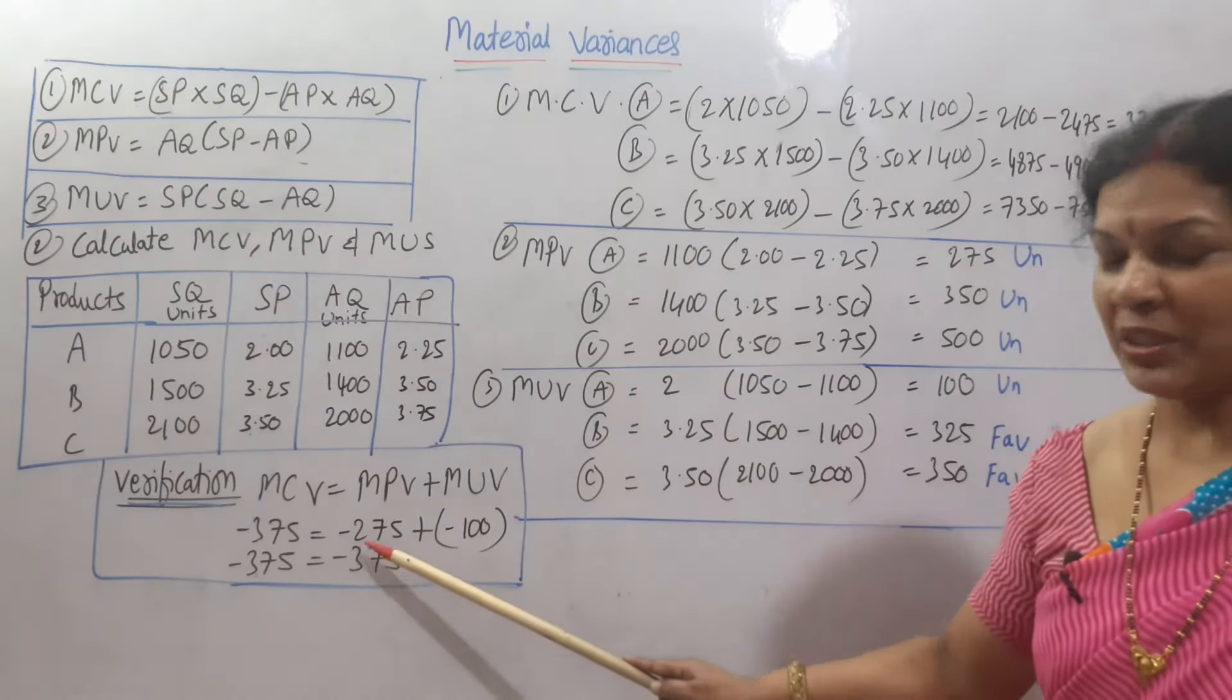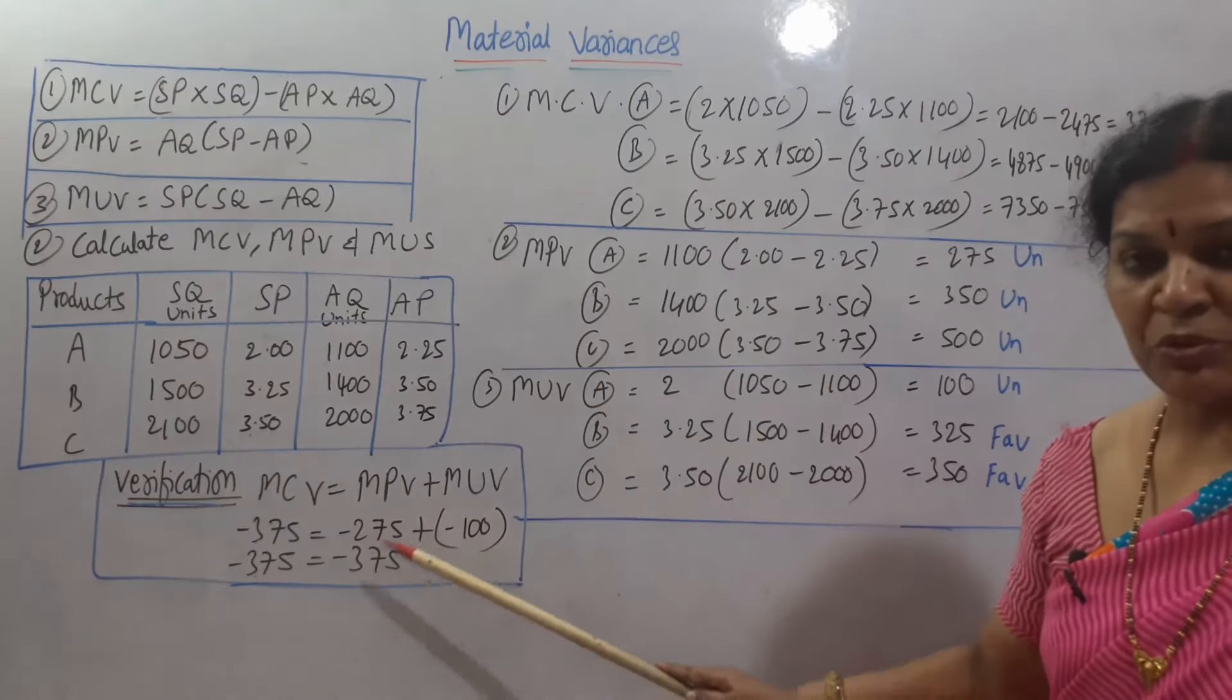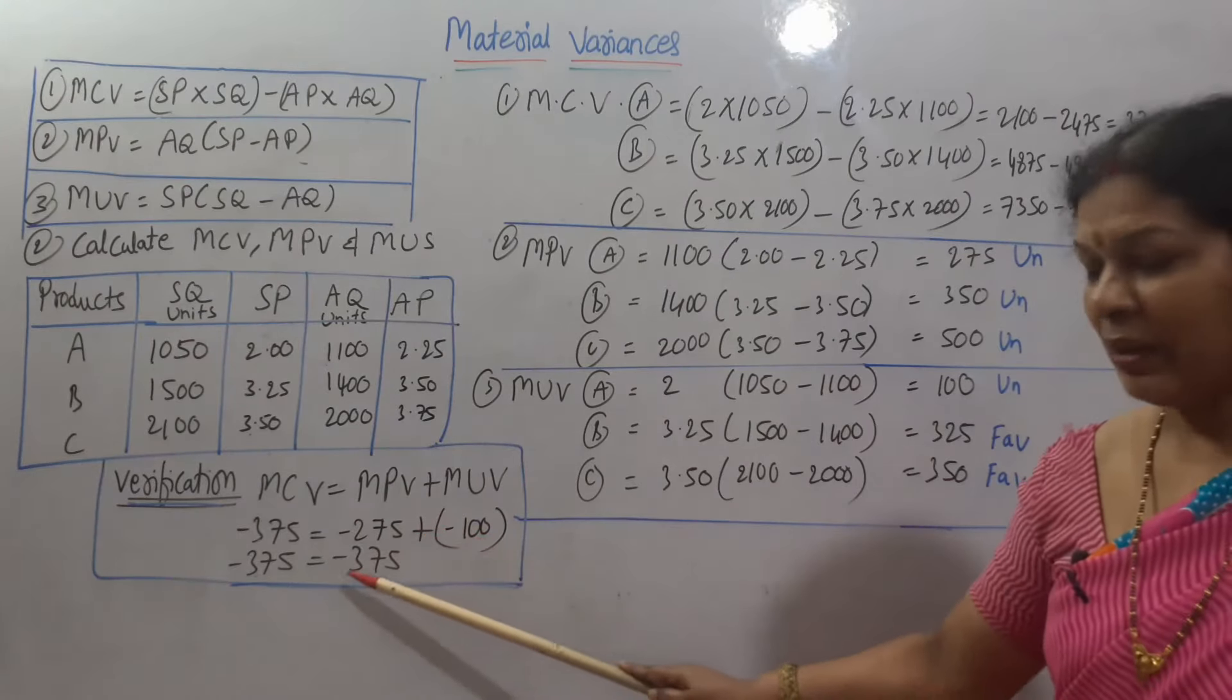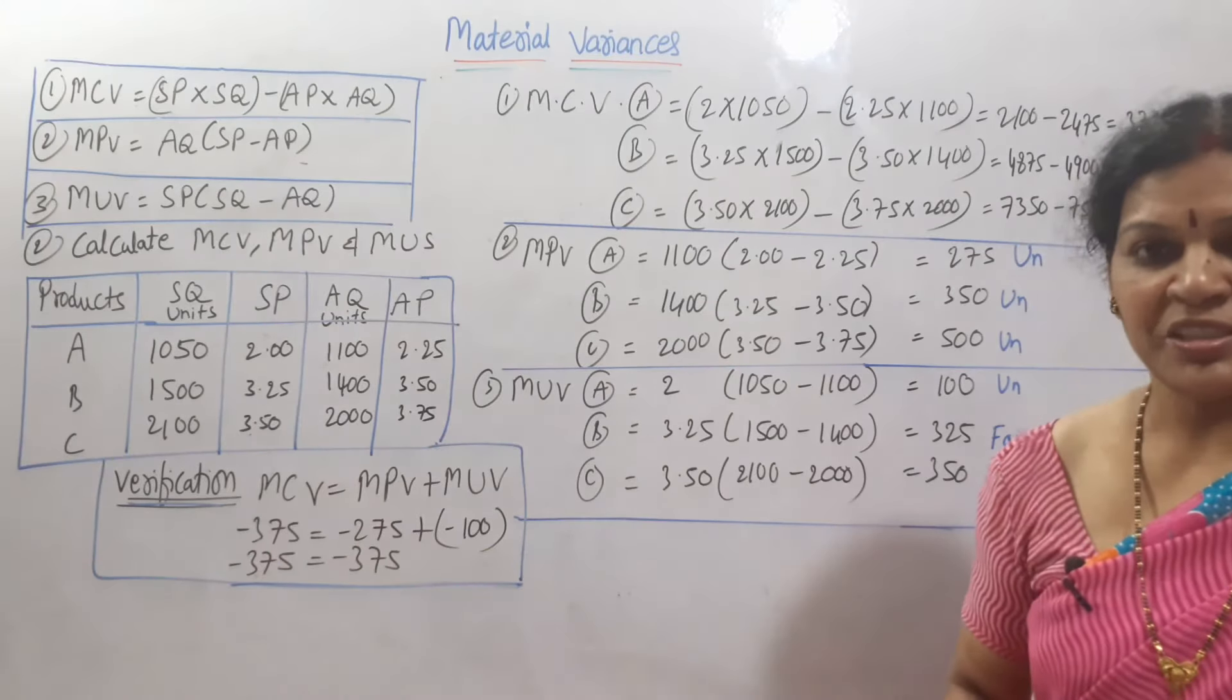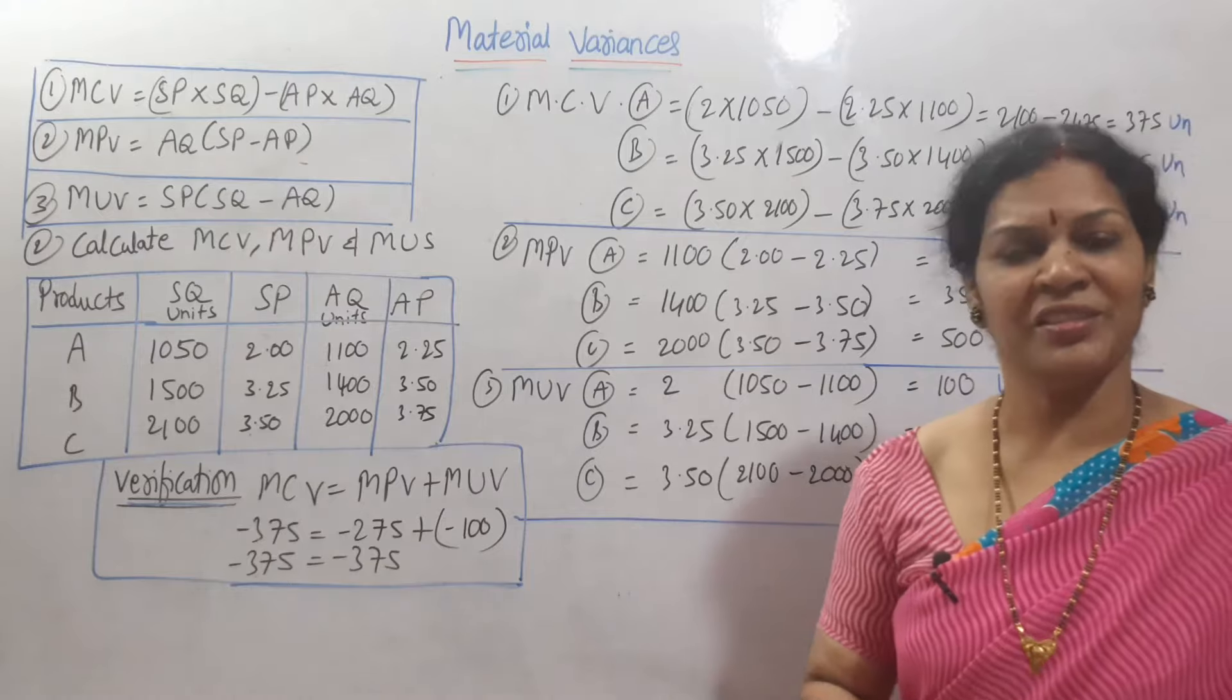But as per the formula, MCV equals MPV plus MUV. Both are minus minus. Minus minus comes to plus. 275 plus 100, minus 375. Here also 375. Telling means problem is correct. That's it.